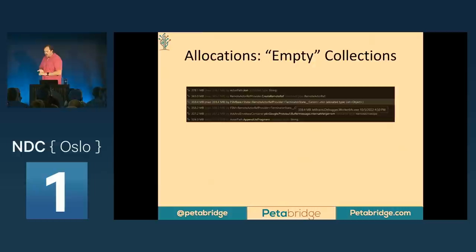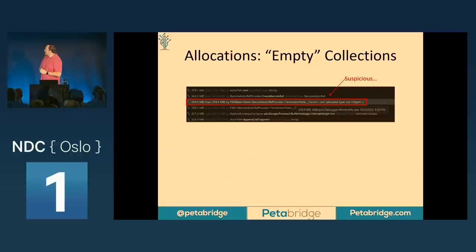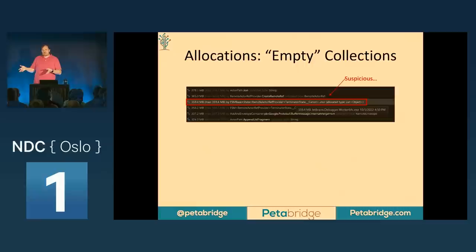Another source of potential memory waste is empty collections. While using JetBrains' dynamic profiler, I noticed that our finite state machine actor — which sends around small state objects describing the current state and position of our actor — was allocating, according to Rider, about 360 megabytes during our remoting benchmark. I thought to myself: this is a simple POCO class that doesn't have any innate data on its own — how could we possibly be allocating that much memory? So I decided to look under the covers.